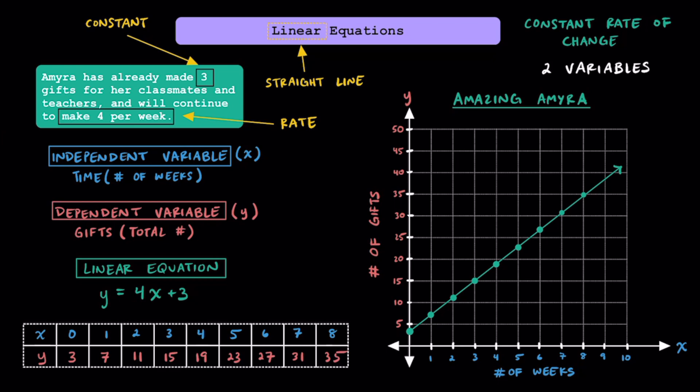From linear equations, we will go over how to create and fill in tables. The independent variable, or x, is always going to go on top, and our dependent variable is always going to go on the bottom. If the table was in a column going up and down, the independent variable, or x, will go on the left, and the dependent variable, or y, will go on the right. Our tables are going to represent possible combinations between the independent and dependent variable, or x and y.